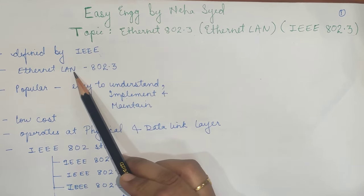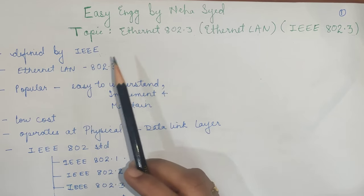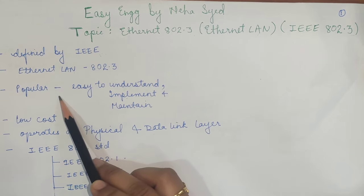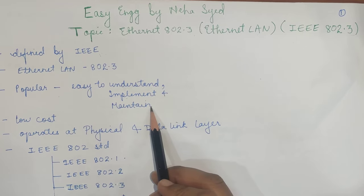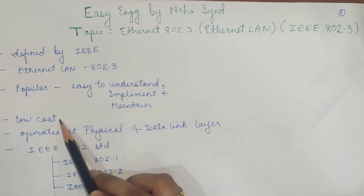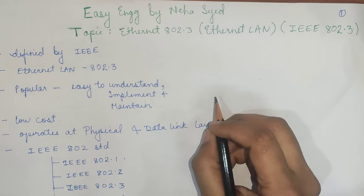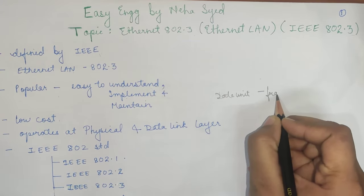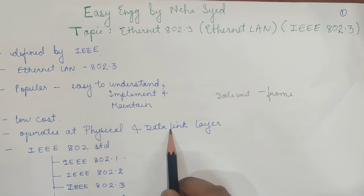What is a LAN? LAN is a communication network connecting a limited geographical area. The connection can be wired or wireless. It is very popular because it is easy to understand, easy to implement, and easy to maintain. Also, the cost required for implementation is very low. The data unit for transmission of data is a frame, and it operates at the physical and data link layer of the OSI model.